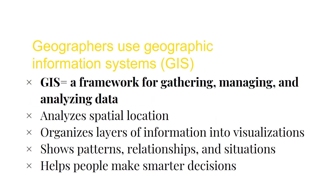Geographers use geographic information systems — GIS. GIS is a framework for gathering, managing, and analyzing data. It analyzes spatial location — where something is located in space — and organizes layers of information into visualizations, meaning it can show more than one thing on a map. It also shows patterns, relationships, and situations, and it can help people make smarter decisions in the future.